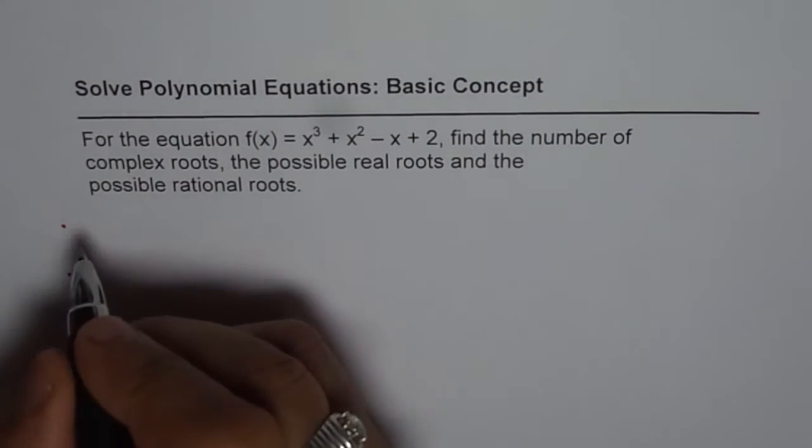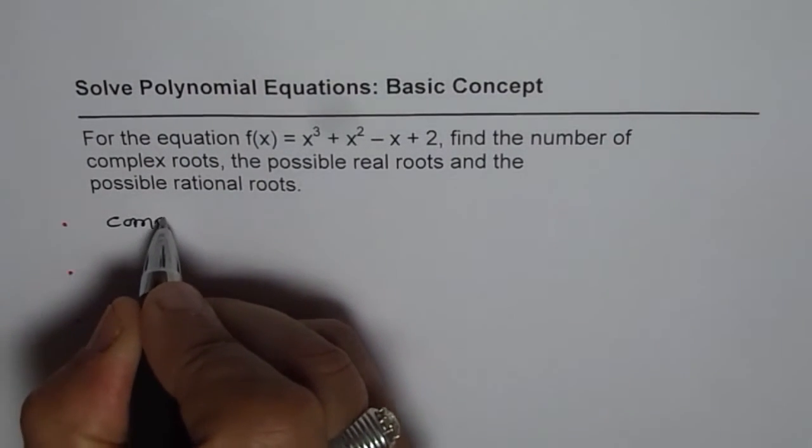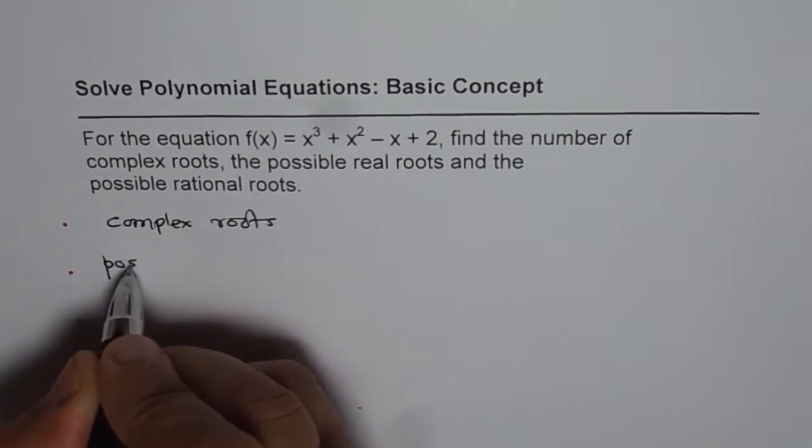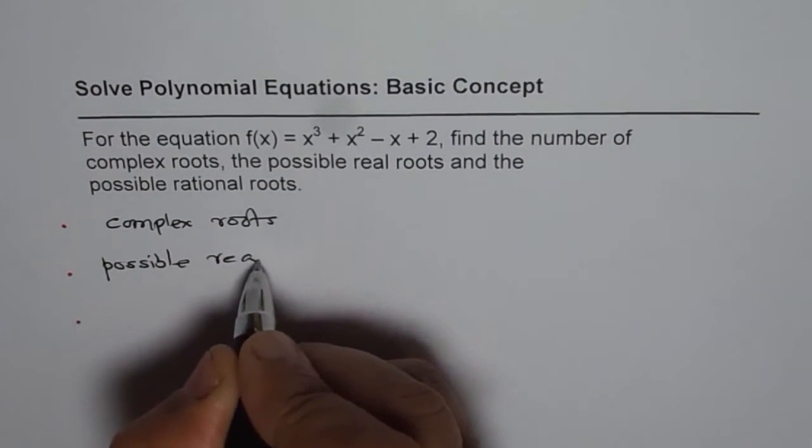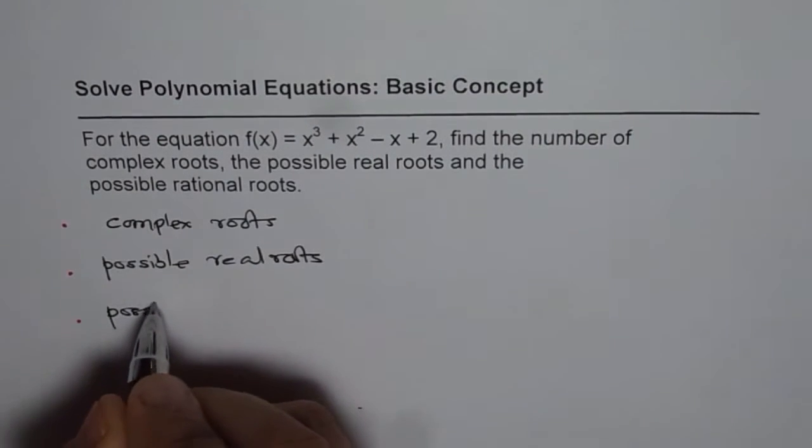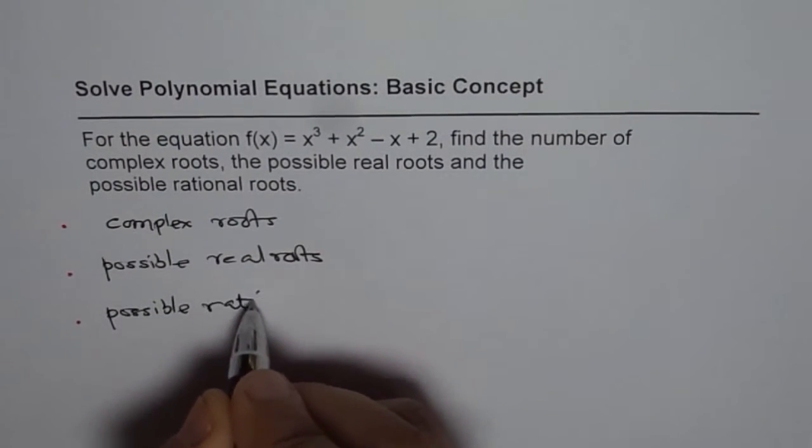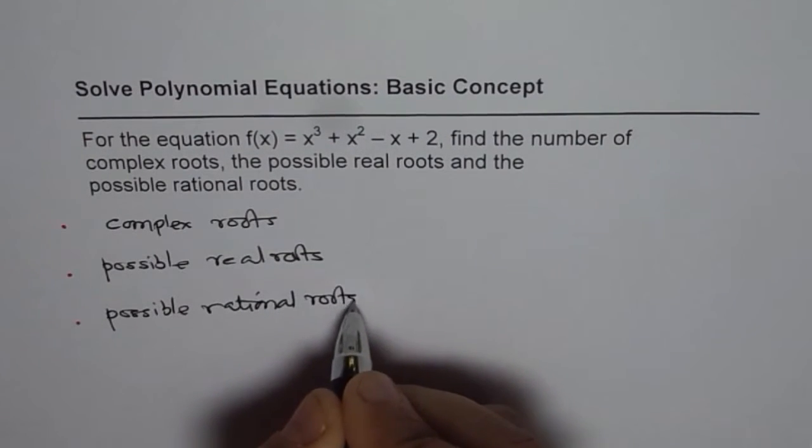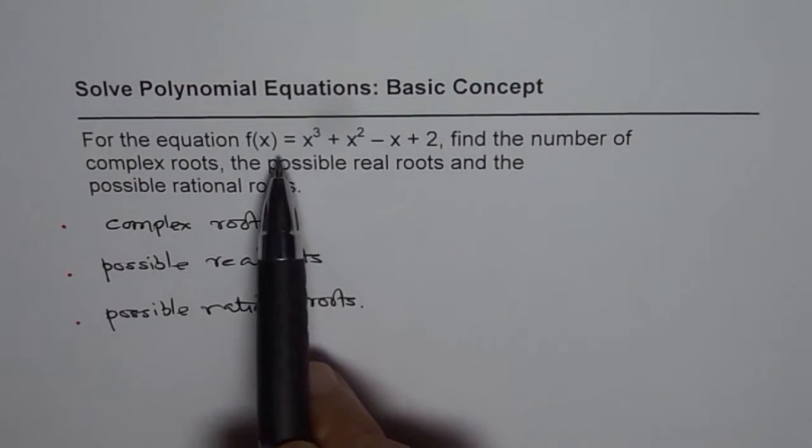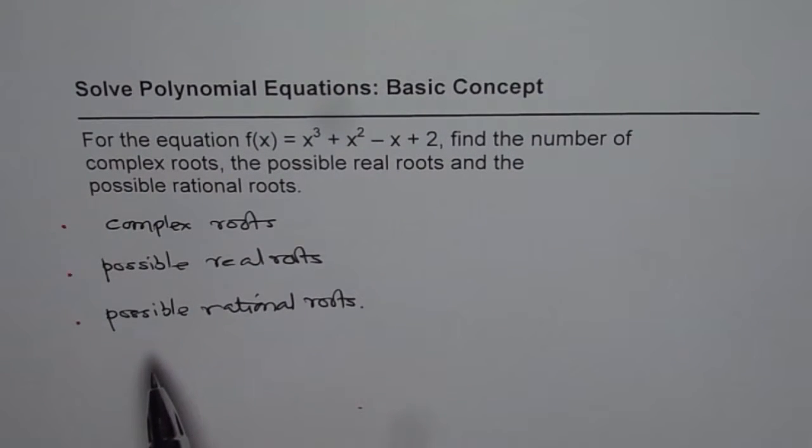One is complex roots. The other one is possible real roots. And the third one is possible rational roots. Now, can you tell me how many complex roots can we have for this cubic polynomial and why? How many possible real roots can we have and what are possible rational roots for this given equation?